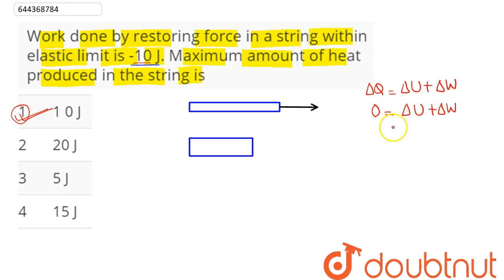So we can see the maximum amount of heat released will be equal to negative of work done, which is given as minus of minus 10 joule. So this energy stored will be dissipated in the form of heat which is plus 10 joule.